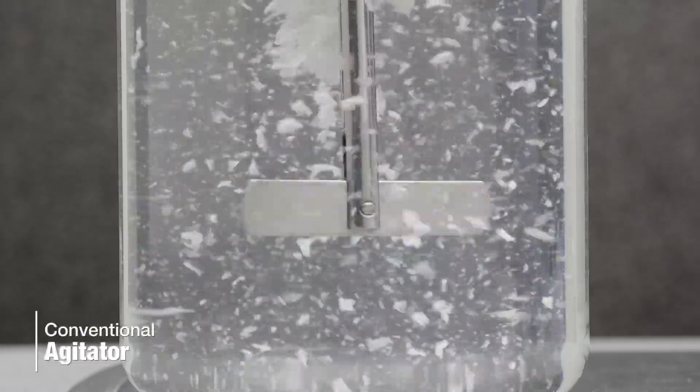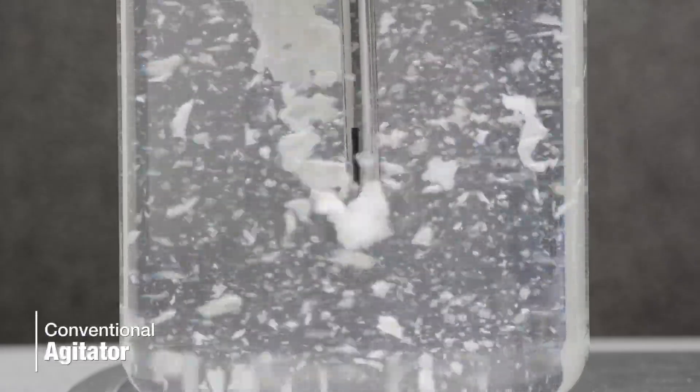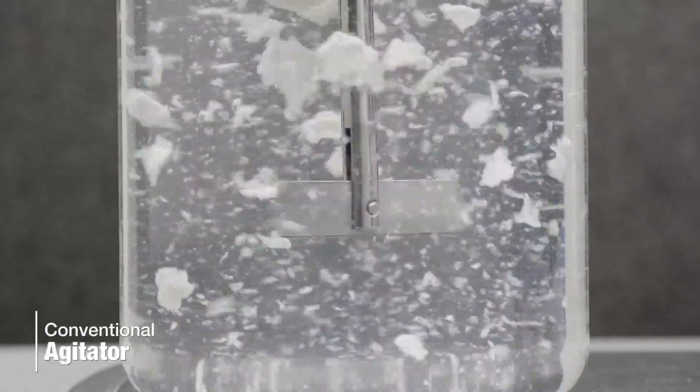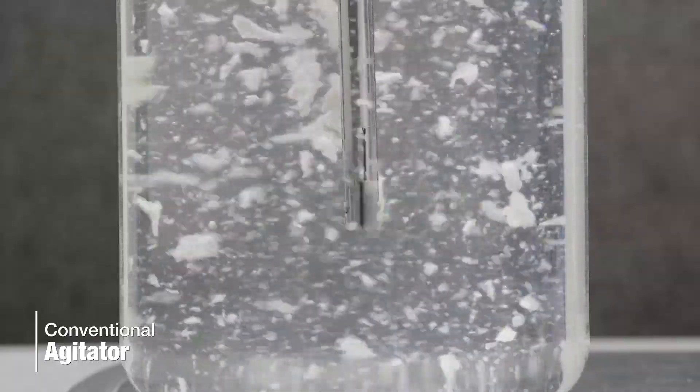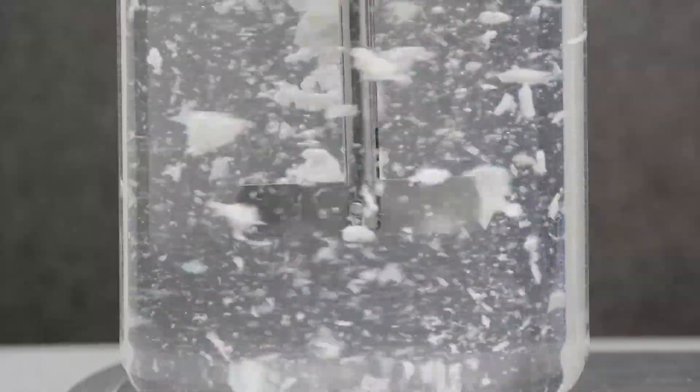If you're dispersing gums and thickening agents with a conventional agitator, the powder must be added slowly and carefully to try to prevent the formation of agglomerates like this. Once these agglomerates have formed, the agitator cannot disperse them.